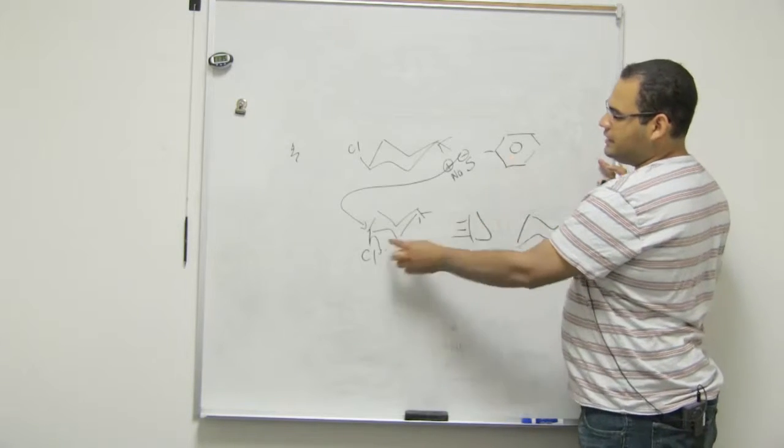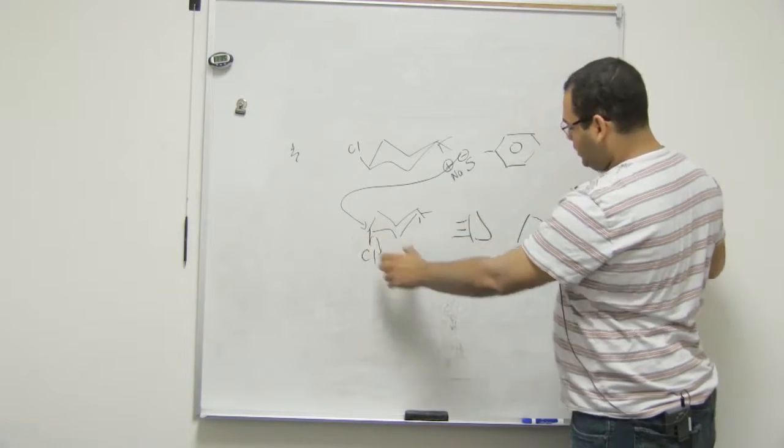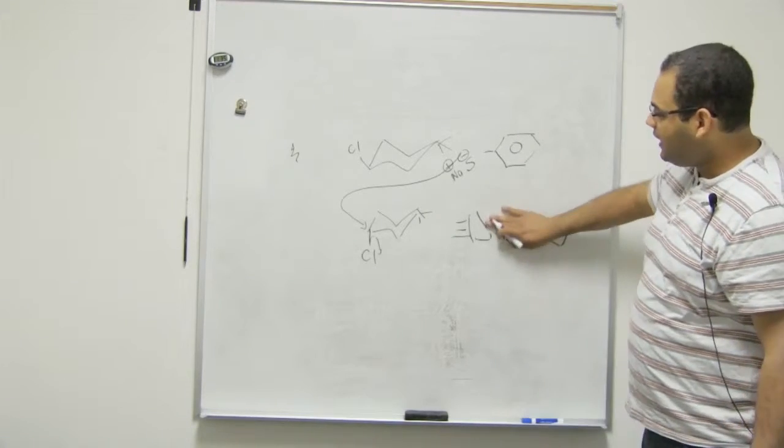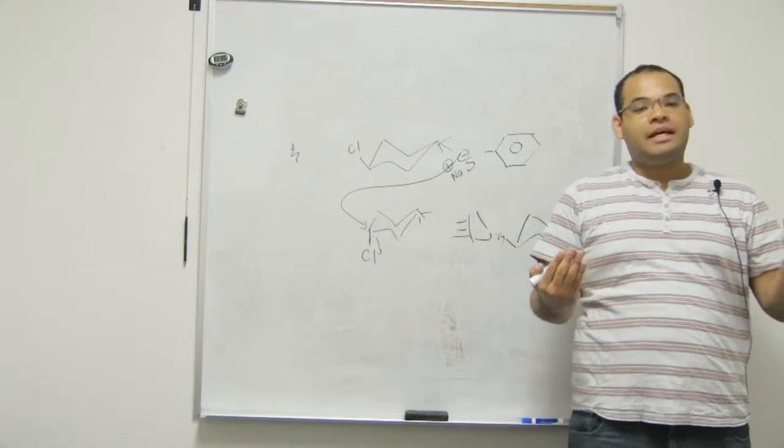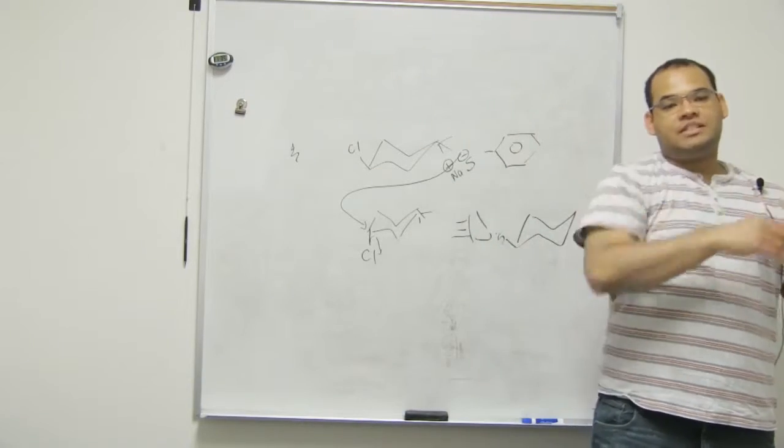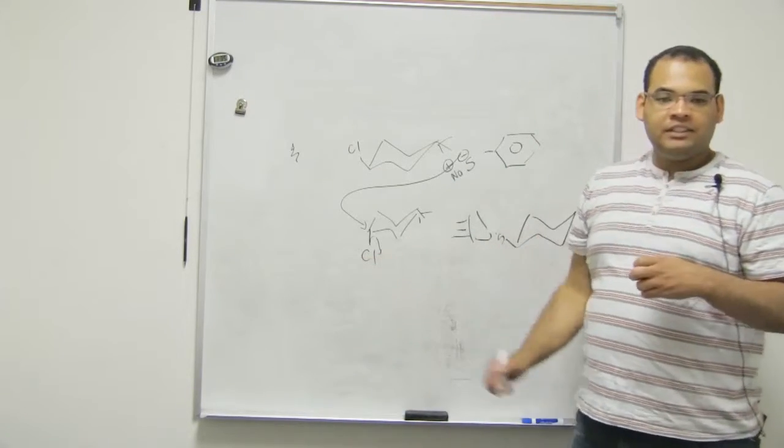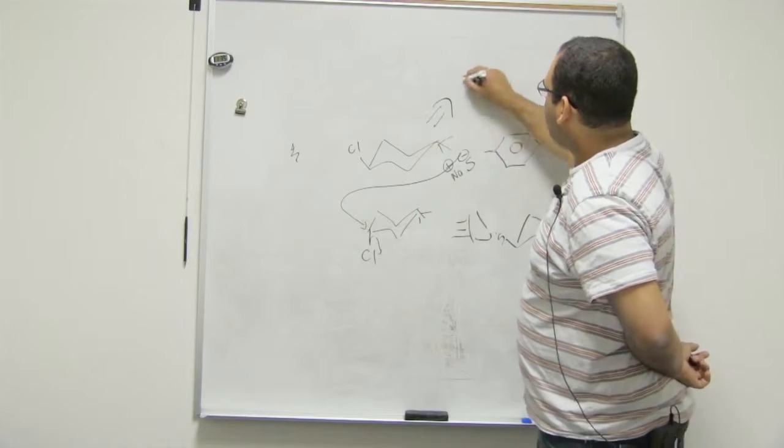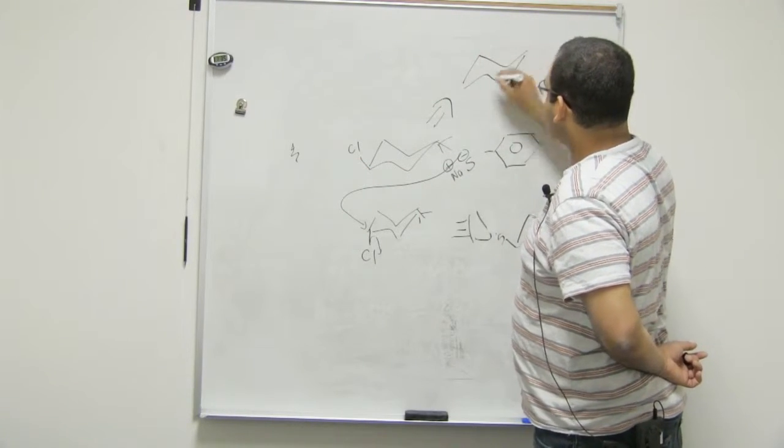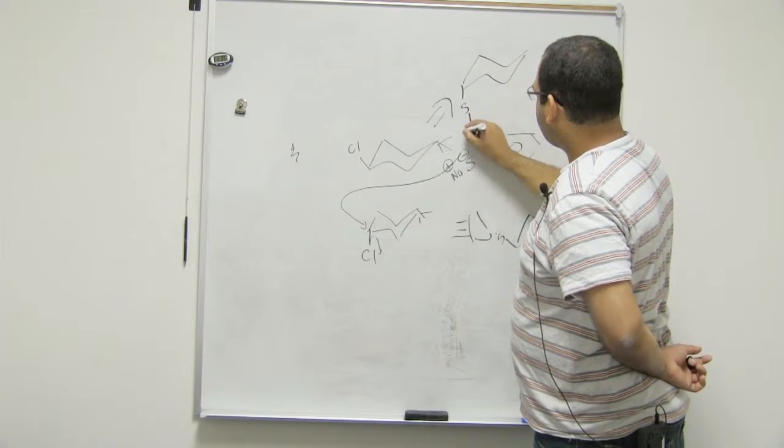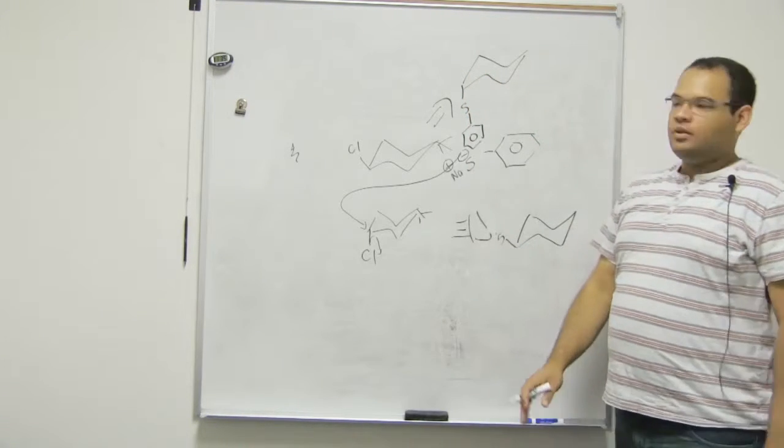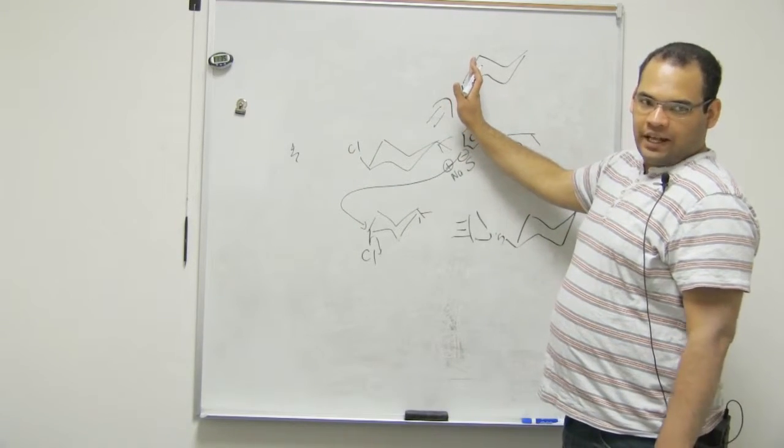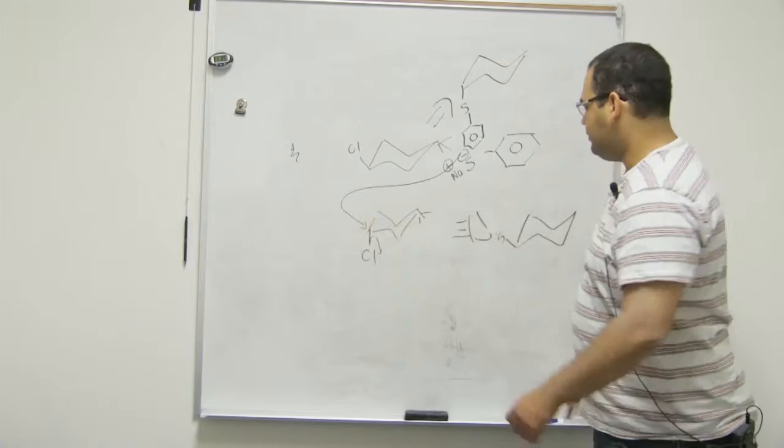Instead of having this placed in an axial position, it would be equatorial. Because it just attacked from the other side. Yes, because remember we needed to do the attack from the opposite side where we want to kick out the leaving group. So this one here is equatorial. We expected the final product to be in this position here. This one that has equatorial goes to axial and this one that has axial goes to equatorial.